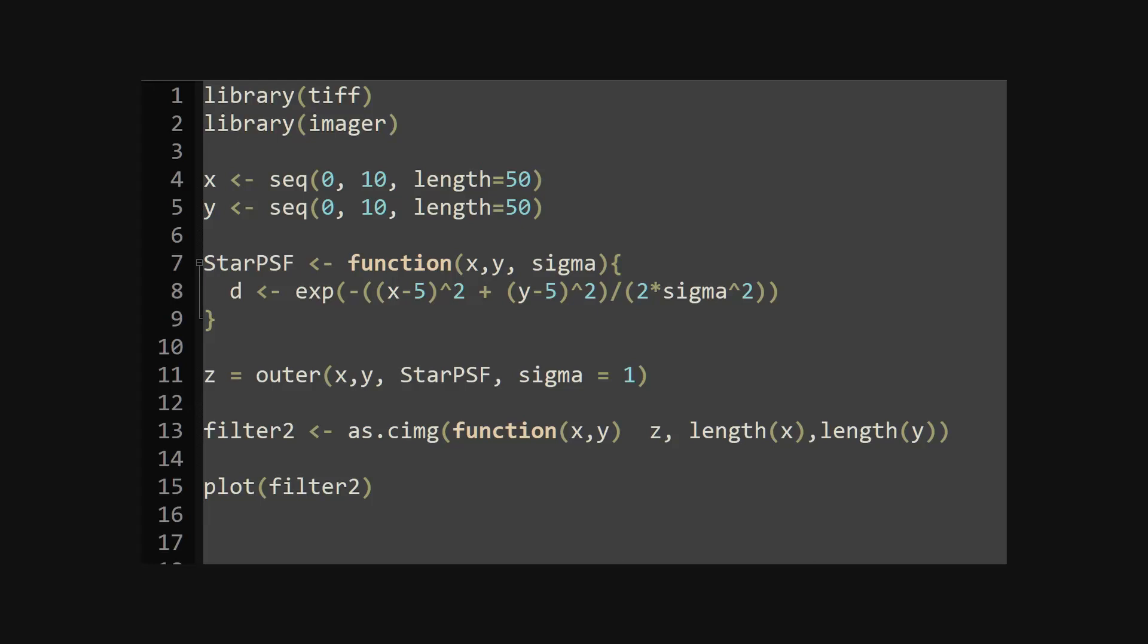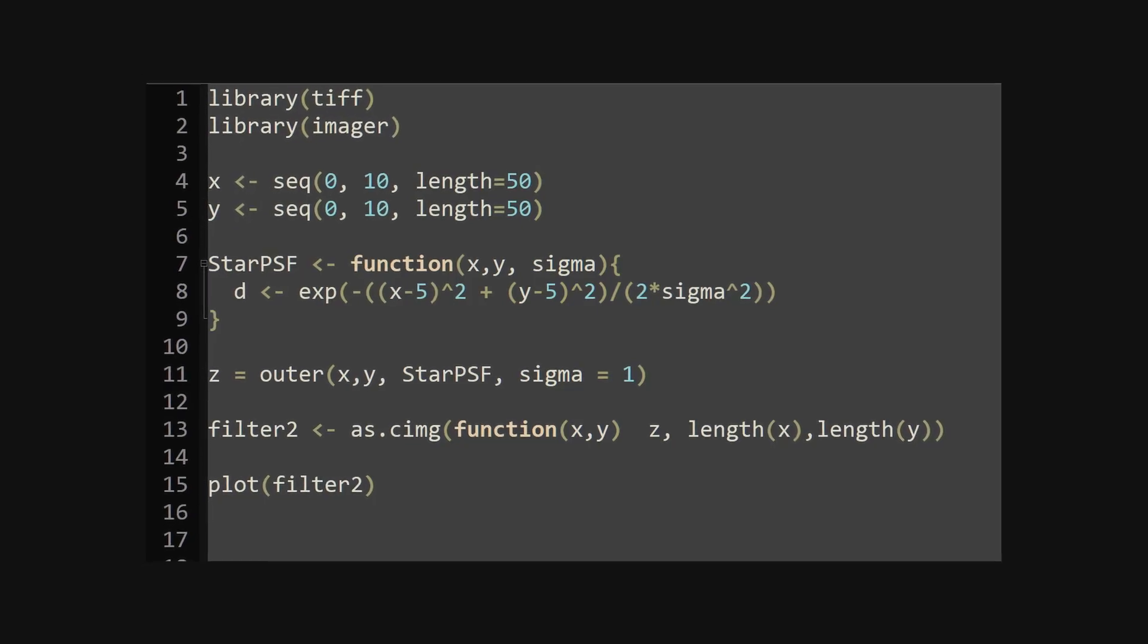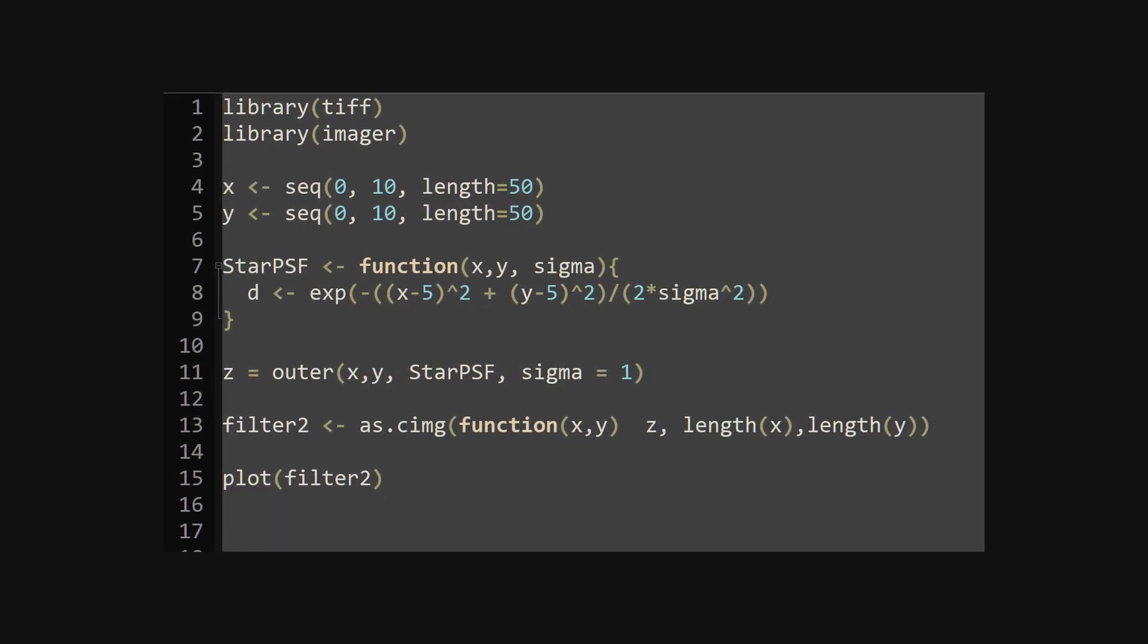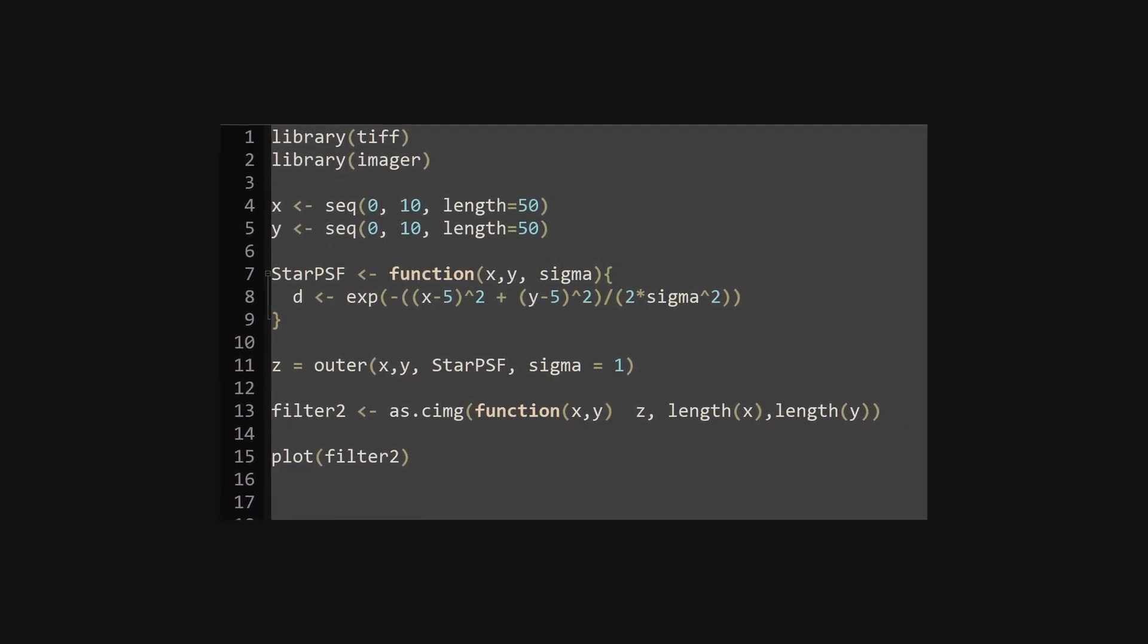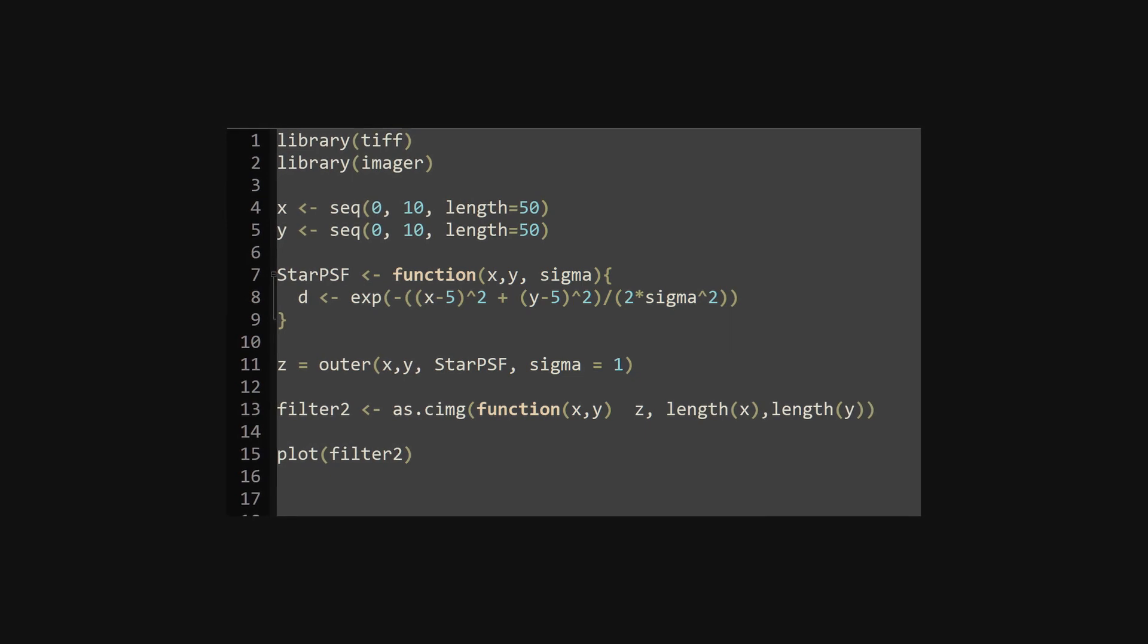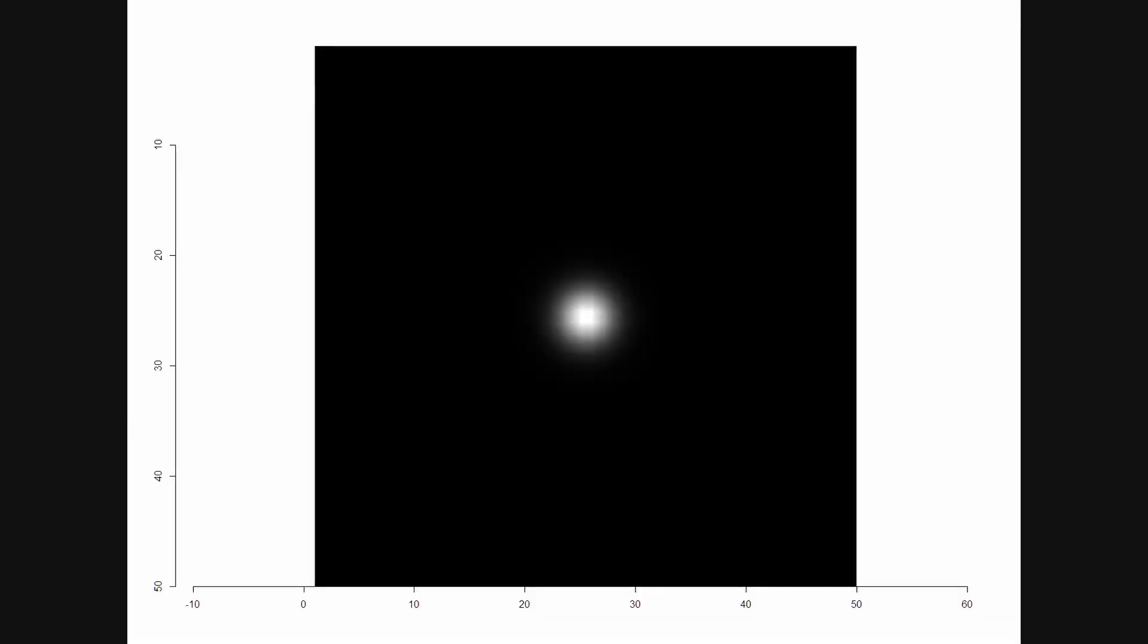Let's see if we can model the central portion of the Airy disk in R. Let's create a kernel that shows how light will spread out from the point source. It's based on a 3D Gaussian distribution. Here is the code I used, and here is what the plot looks like.